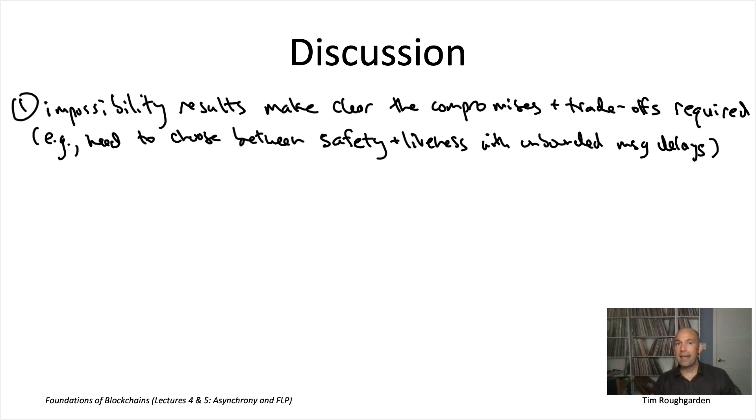Longest chain protocols, so-called Nakamoto consensus like Bitcoin and Ethereum, when there's asynchrony, actually favor liveness over consistency. They may lose consistency if you have very long message delays. Many other blockchain protocols, most of the newer generation layer ones, make the opposite trade-off, favoring safety, favoring consistency over liveness.